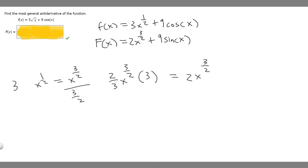And whenever we take the antiderivative of a function, you have to add plus C at the end to represent a constant. So the answer to this is 2x to the 3 over 2 plus 9 times the sine of x plus C.